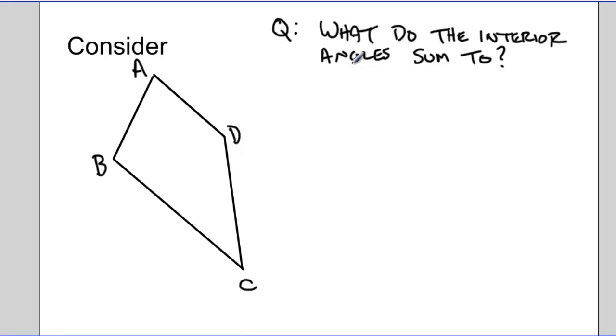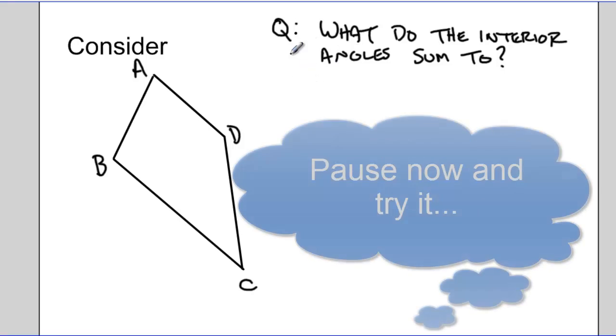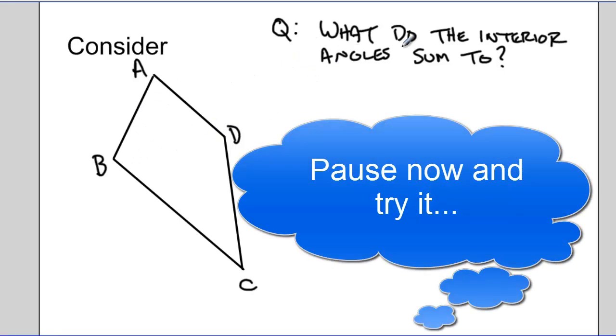Why don't you write down your best guess, and maybe using the Protractor app that you've downloaded, see if you can try and figure out what the interior angles in this quadrilateral sum up to.